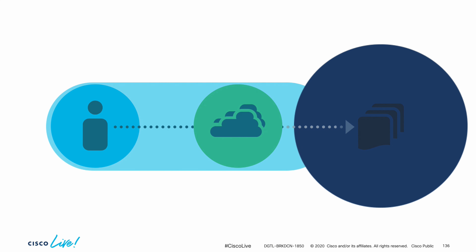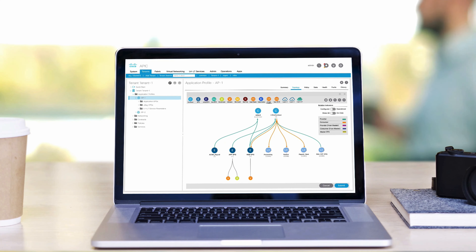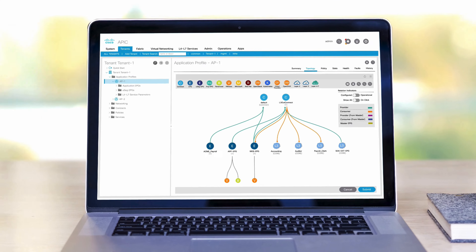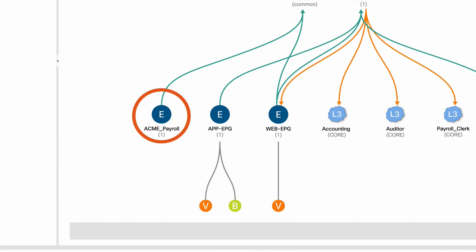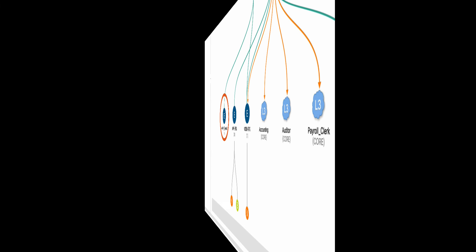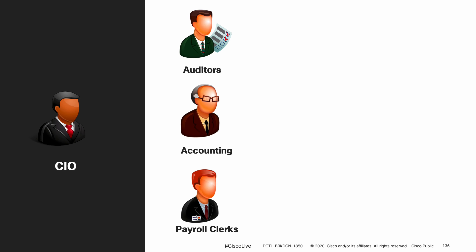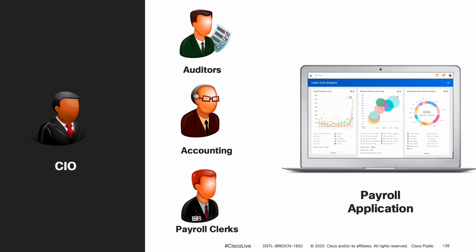In our example, it's another day at the office, and we have a brand new payroll application which is running on top of an ACI network in the data center. Our CIO asks us to provide access to auditors, the accounting department, and the payroll clerks only, since this is a critical application. They may be connecting wired, wireless, or even from different locations and branches, so it is important to secure all those potential points consistently.